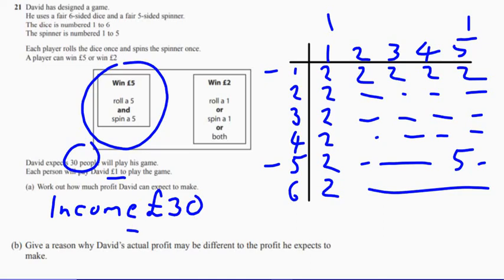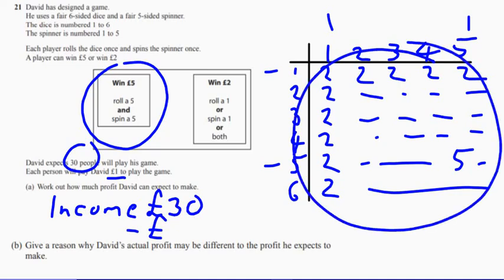But how much does he have to pay out? Well, if we look at this table just over here, how much would he expect to pay out? Well, in probability terms, if you look at the number of different possibles here, five times six, there are thirty different possibles.